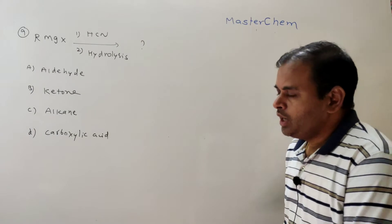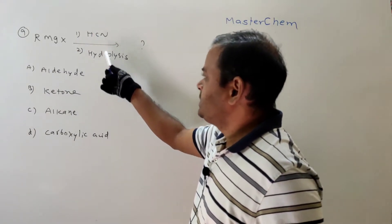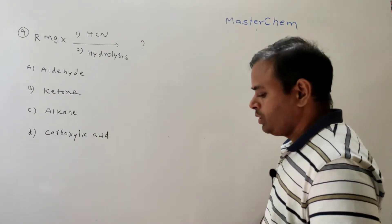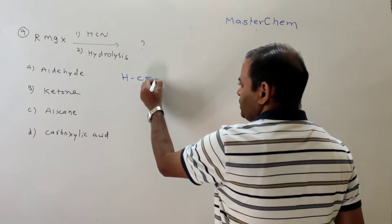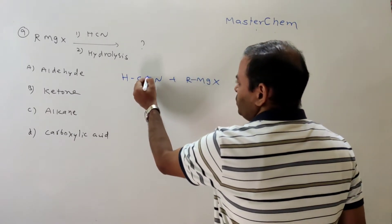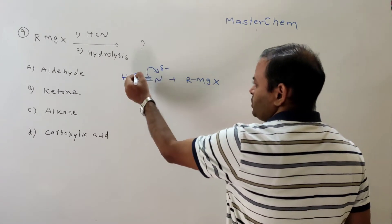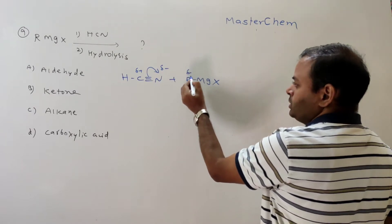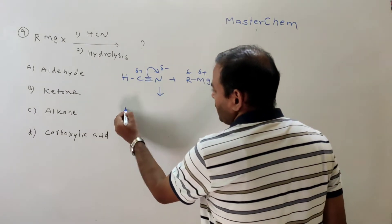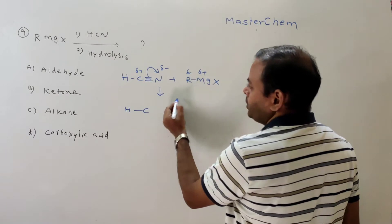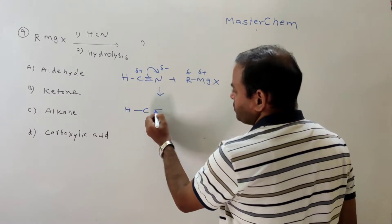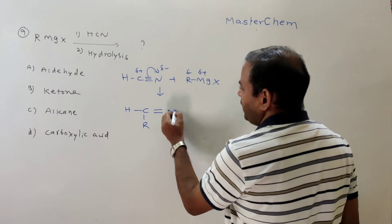Question 9: Alkyl magnesium halides — Grignard reagent — with HCN followed by hydrolysis. What is the product? We write this reaction: HCN and RMgX. Due to the greater electronegativity of nitrogen, nitrogen gets a negative charge and carbon gets a positive charge in HCN. In RMgX, the carbon gets a negative charge and the metallic part gets a positive charge.